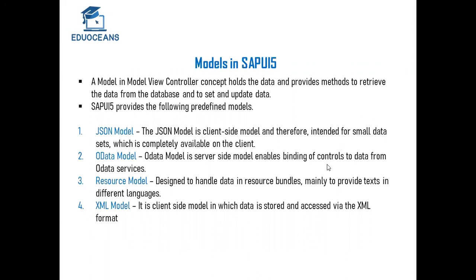Next is the resource model. The resource model is used with a resource bundle. If you have hard-coded text in your application that you maintain centrally in the i18n.properties resource bundle file, you use the resource model. It helps you manipulate data from the resource bundle so it can be used throughout the application. It mainly works with text that can be translated into different languages.